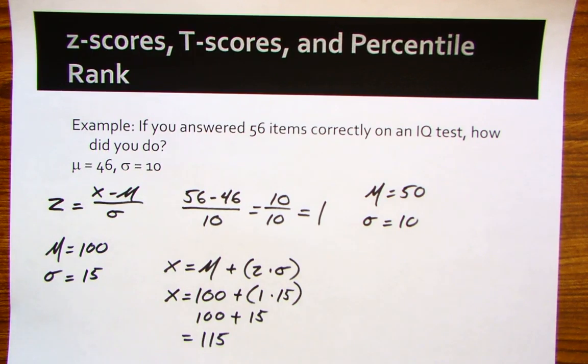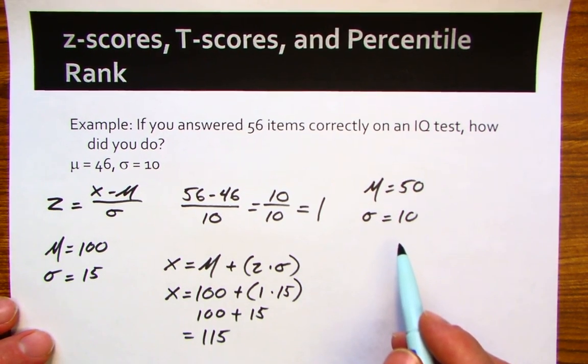You can imagine why it's helpful to have a t-score system where we always know the mean is 50 and the standard deviation is 10. It's just like with z-scores, so we can get a sense of how an individual has done on a particular test. You'll see t-scores a lot with psychological inventories.